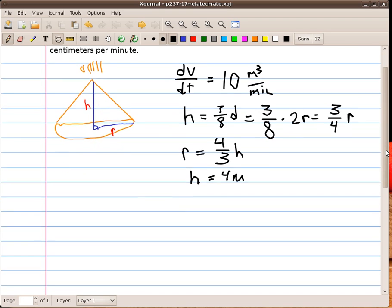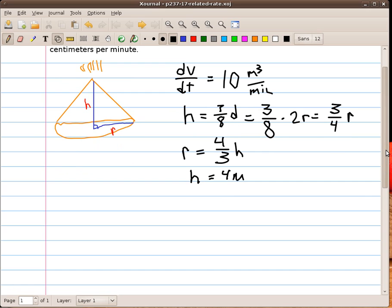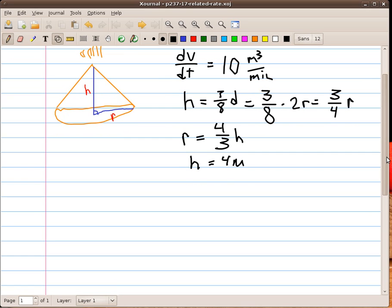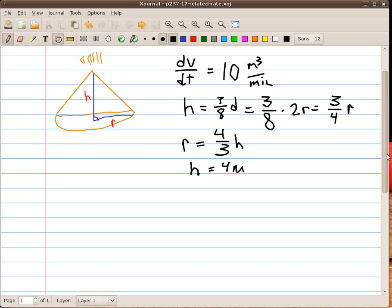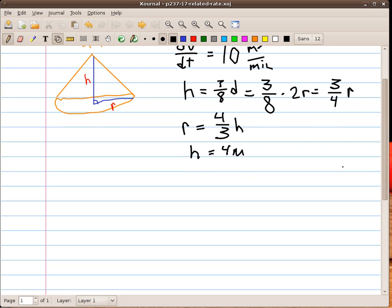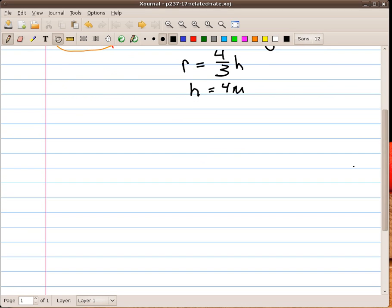Now, we need an equation that relates our variables, volume, height, and radius. So we're going to use the volume of a cone. And the volume of a cone is one third pi r squared h.